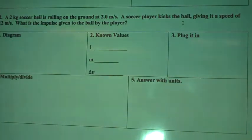So the second problem, a 2kg soccer ball is rolling on the ground at 2 meters per second and the soccer player kicks the ball giving it a speed of 12 meters per second. What is the impulse given to the ball by the player?